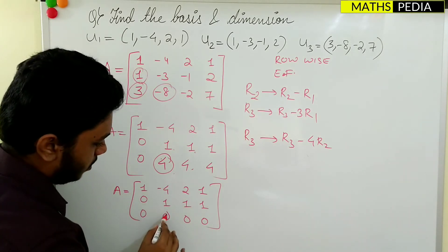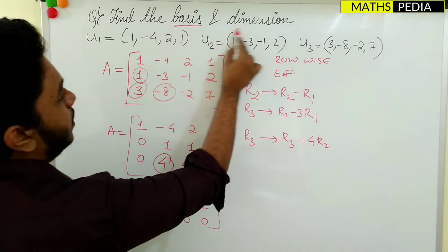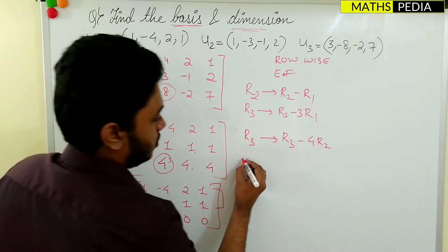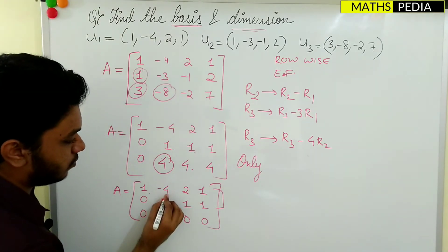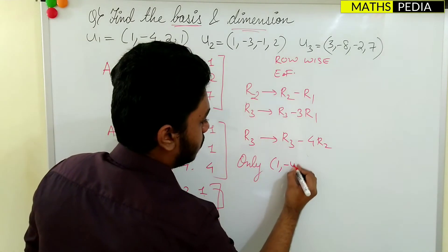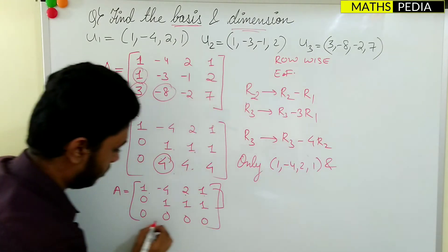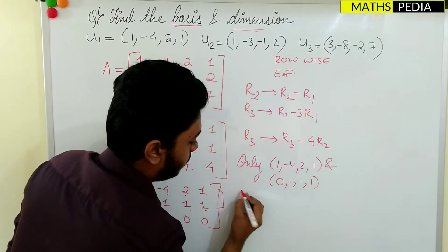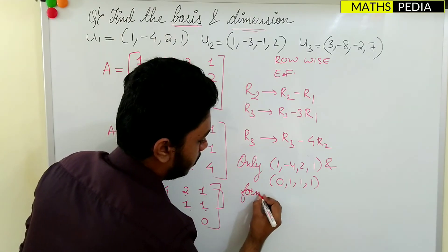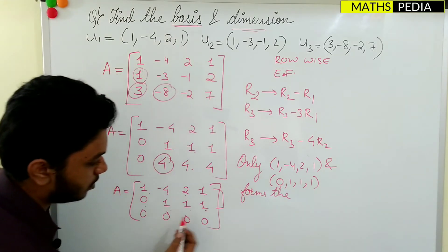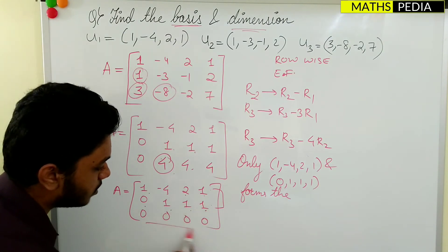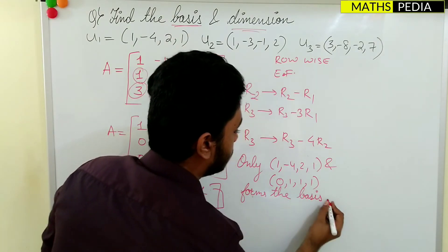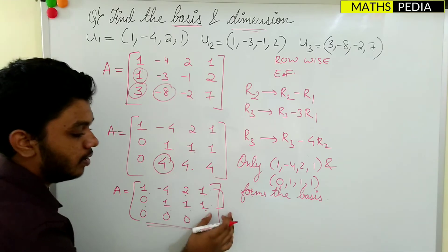For finding the basis, remember that the non-zero rows will be the basis vectors. So the basis consists of [1, -4, 2, 1] and [0, 1, 1, 1]. These two are the non-zero rows, and the last row is a zero row, so it does not form part of the basis.